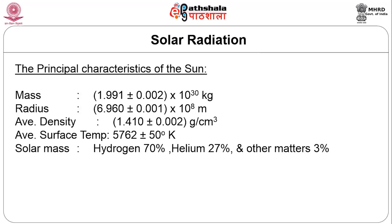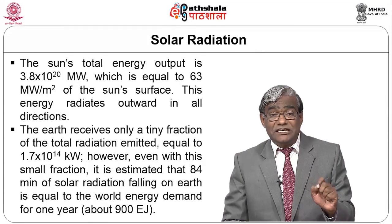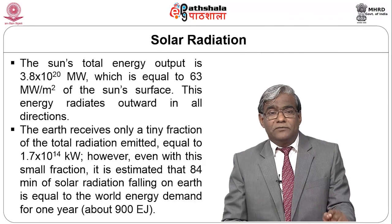The sun's mass is about 1.9 × 10³⁰ kg, and its radius is about 6.96 × 10⁸ meters. The average density is about 1.4 g/cm³ and the average surface temperature is about 5,762 Kelvin. Solar mass composition is hydrogen at about 70%, helium at 27%, and other matter at 3%. The sun's total energy output is about 3.8 × 10²⁰ megawatts, equal to 63 megawatts per square meter of sun surface.